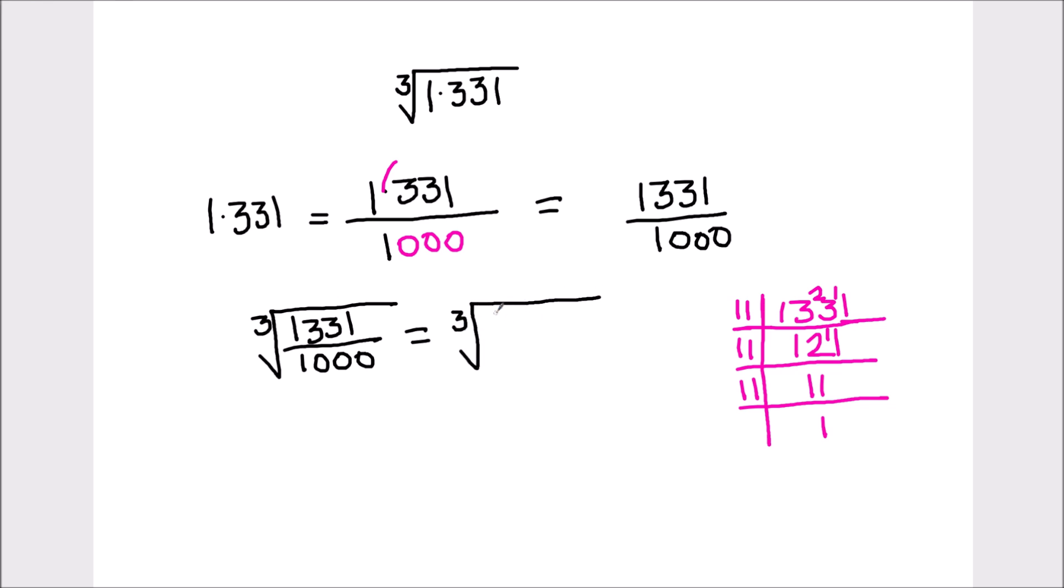So in the numerator we need the factors of 1000, which will be 10 times 10 times 10. 1000 can be written as 10 times 10 times 10, or we can break it down into smaller factors which is 2 times 5.